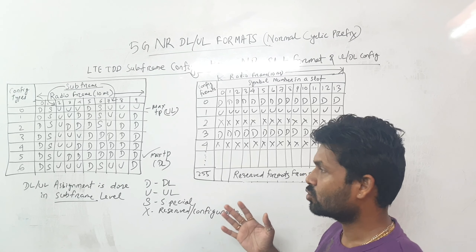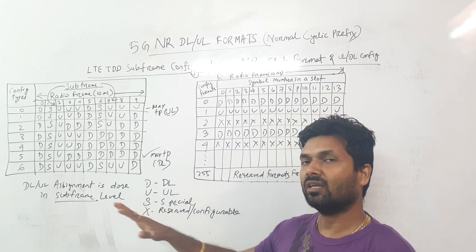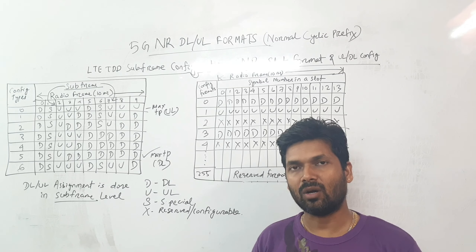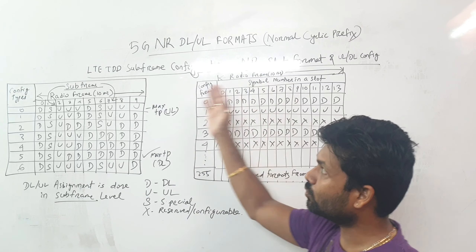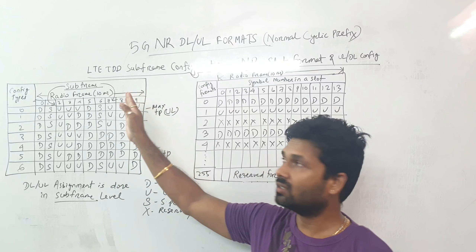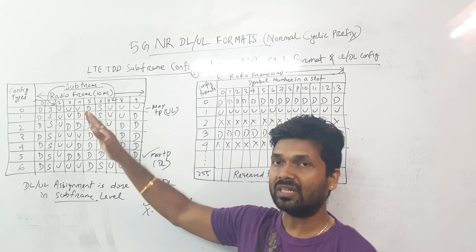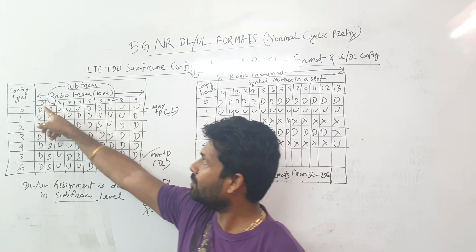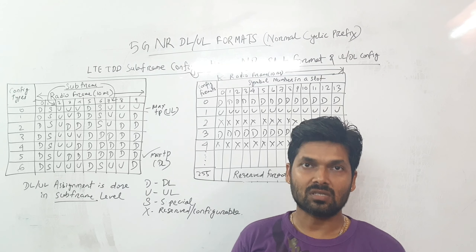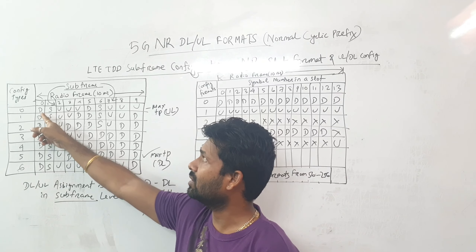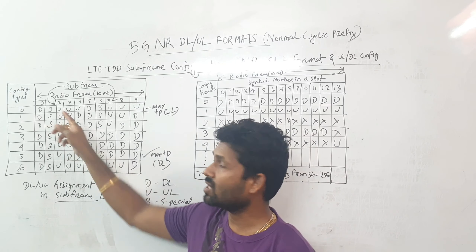One basic difference between LTE and NR transmission management is that in LTE we manage uplink/downlink transmission at the subframe level. The entire radio frame in LTE TDD is 10ms, and we have subframes 0 through 9 — ten different subframes. For each subframe, D stands for downlink transmission, S stands for special subframe, and U stands for uplink transmission.